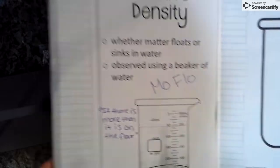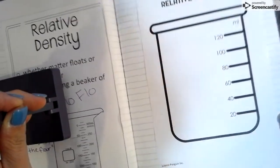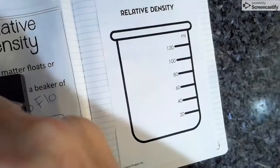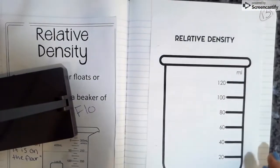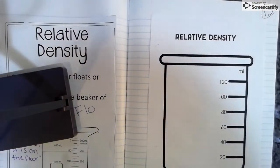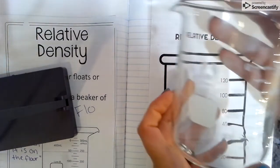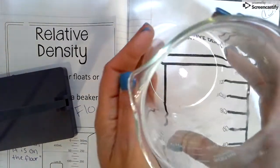Then on your next page, this is where we're going to do kind of a little experiment. You should have this page next, and this is a relative density page. What this is, is this is a picture of a beaker. And today we're going to use a beaker.